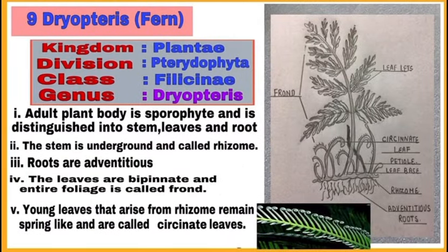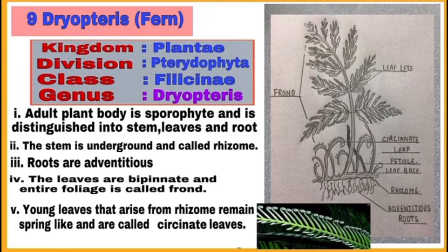Dryopteris, fern or pteridophyte: the adult plant body is a sporophyte distinguished into stem, leaves, and roots. The stem is underground and called a rhizome. Roots are adventitious. The leaves are bipinnate and the entire foliage is called a frond. Young leaves that arise from the rhizome remain spring-like and are called circinate leaves. Draw its diagram in your notebook as shown and label the different parts.